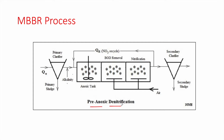In the pre-anoxic denitrification system we have three main reactors. First, the anoxic tank or denitrification tank — it has MBBR media and a mixer, with no aeration, since denitrification happens in anaerobic conditions. Then we have a BOD removal tank with MBBR media and air injection for aerobic conditions. Finally, we have the nitrification tank, also with MBBR media and aerobic conditions.